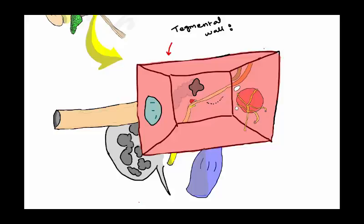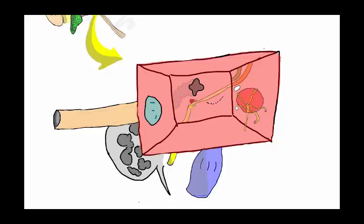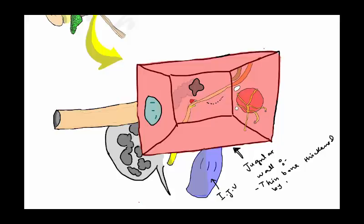The superior part is called the tegmental wall. There is a thin bone called the tegmen tympani from the petrous part of the temporal bone, which separates the tympanic cavity from the middle cranial fossa. The inferior wall is the jugular wall. There is a thin bone which separates the tympanic cavity from the internal jugular vein, and this bone is thickened by the mastoid air cells.